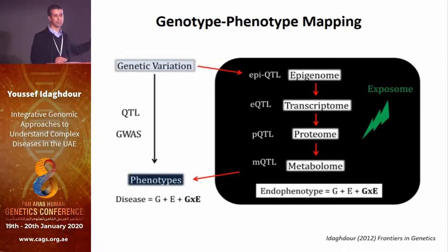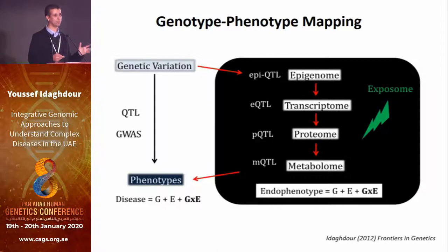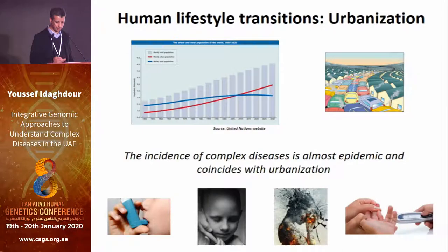One term which was missing in this model was mentioned again by Professor Pierre, which is epistasis. That's another very complex thing to do because of power issues — what we call G×G interactions.